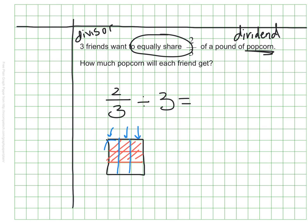If this represents the amount each person would get, we'll see that they get two out of nine equal sections, so they will be eating two-ninths of a pound. So my complete number sentence would be that two-thirds divided by three equals two-ninths.